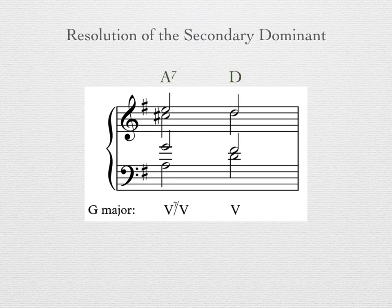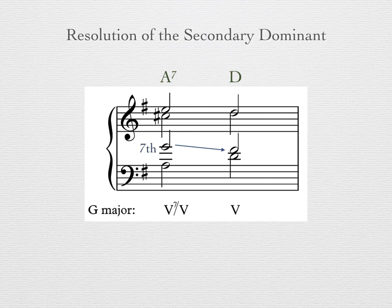Secondary dominant chords resolve in the exact same way as diatonic dominant 7th chords. The 7th of the chord resolves down by step, and the root resolves down by 5th — or up by 4th in this case — just like in the circle of 5ths progression. Secondary dominant chords will always have an accidental alteration to make the major-minor 7th chord quality on a scale degree other than V. So keep an eye out for accidentals to tip you off to any secondary dominant chord.